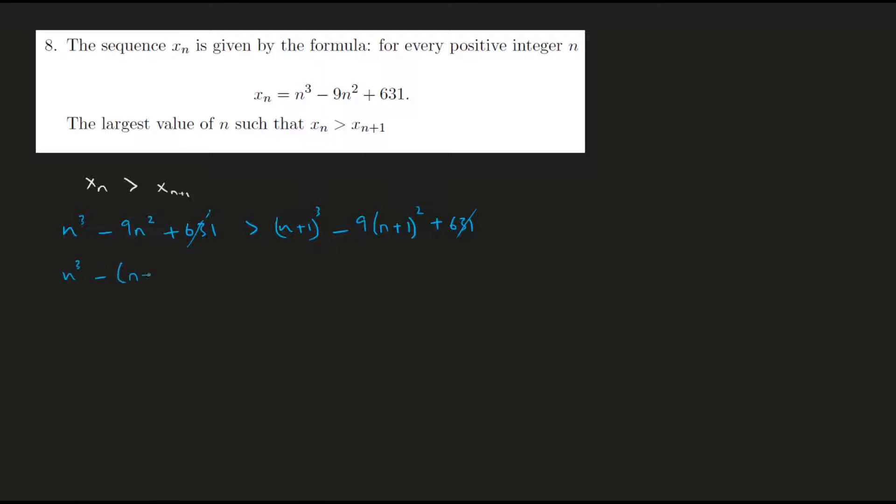This would give me n cube minus n plus 1 whole cubed minus 9 times n square minus n plus 1 whole squared is greater than 0. Using the formula of a cube minus b cube, which is a minus b times a square plus b square plus ab, we would get n minus n minus 1 times n squared plus n plus 1 whole squared plus n times n into n plus 1, minus 9 times, again using a square minus b square, the formula for a square minus b square here I would get a minus b into a plus b.